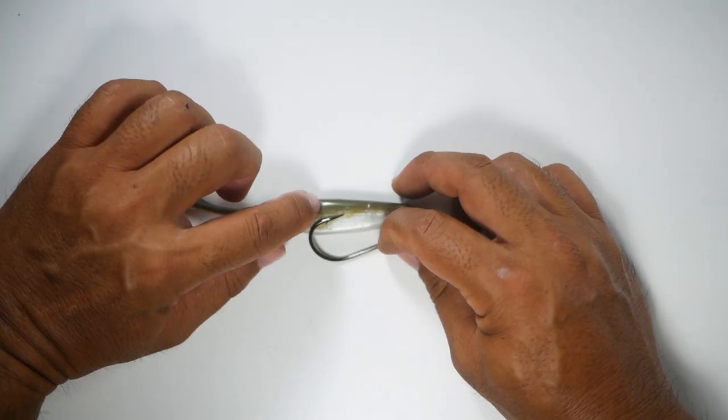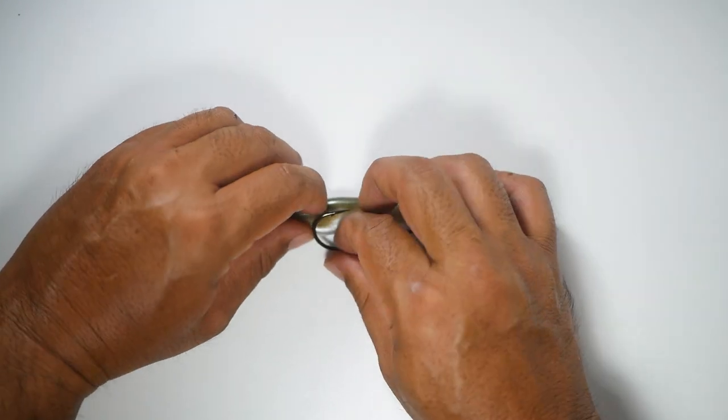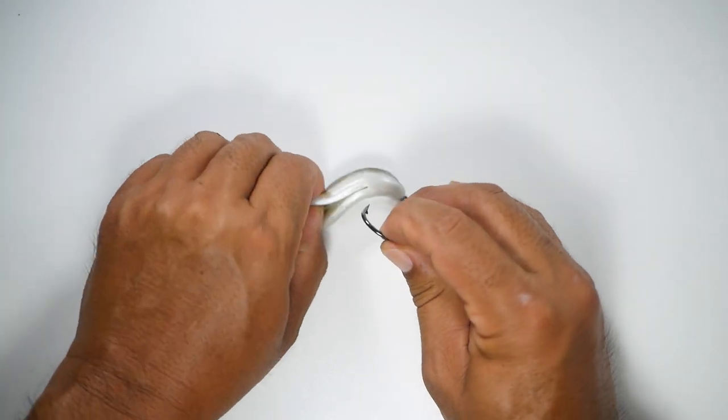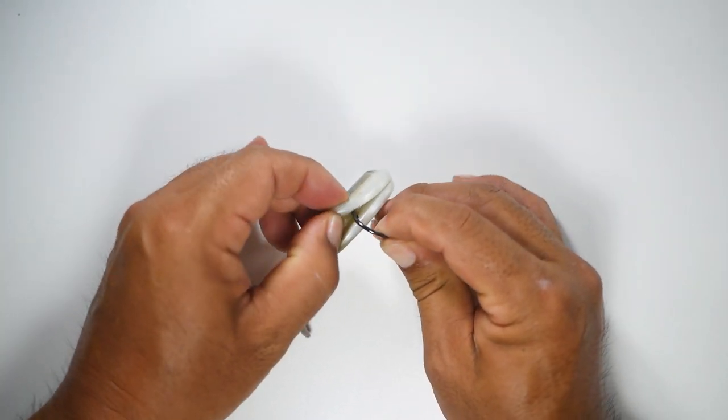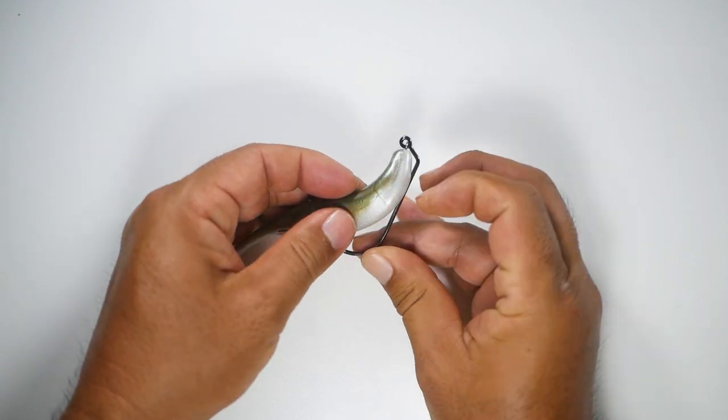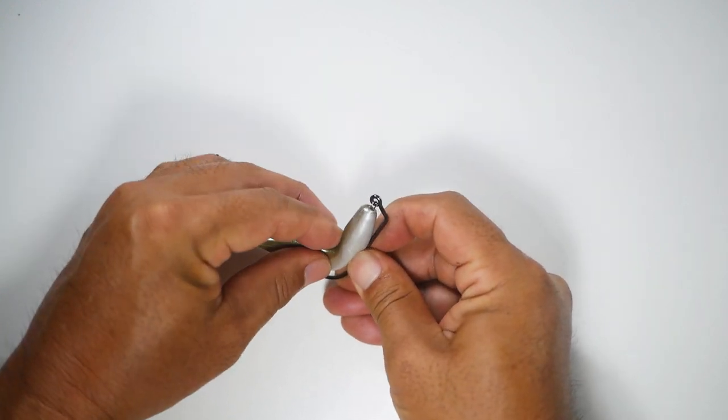So I want the hook to come out right about there in the back. So I can flip it over, open up the inside, run the hook exactly through the center so it comes out at that point that we wanted there.